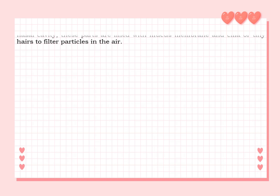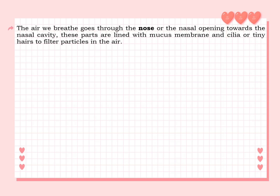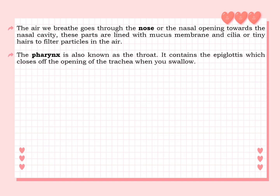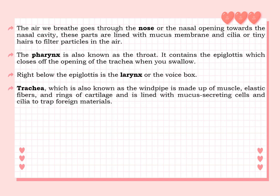Here is the step-by-step process of respiration. The air we breathe goes through the nose or nasal opening towards the nasal cavity. These parts are lined with mucous membrane and cilia, or tiny hairs, to filter particles in the air. The pharynx is also known as the throat; it contains the epiglottis, which closes off the opening of the trachea when you swallow. Right below the epiglottis is the larynx, or the voice box. Next is the trachea.